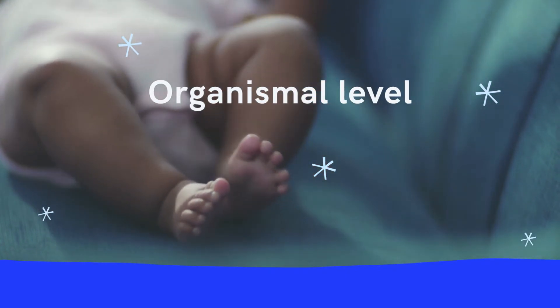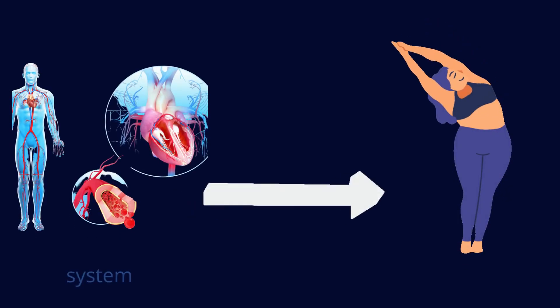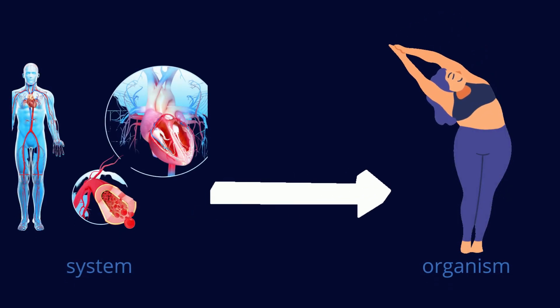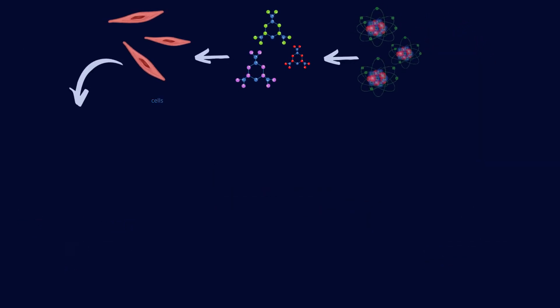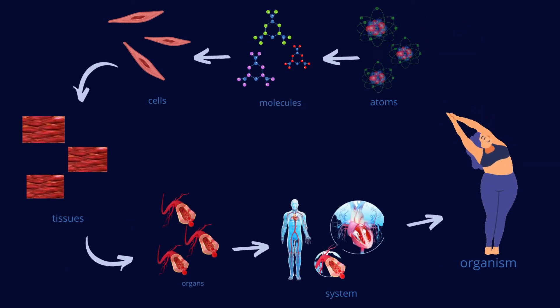The last level is the organismal level. All of the parts of the body functioning together form the organism. Now finally, this is a clear summary of all the levels of structural organization of the human body.